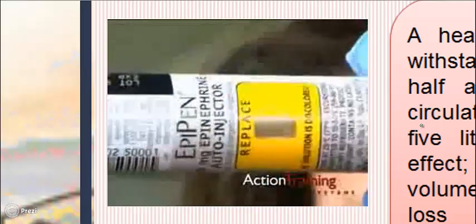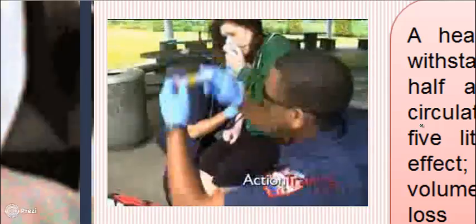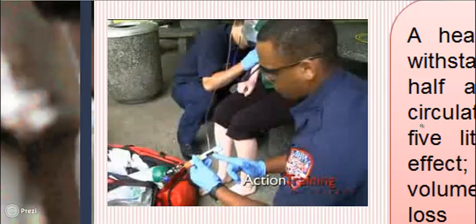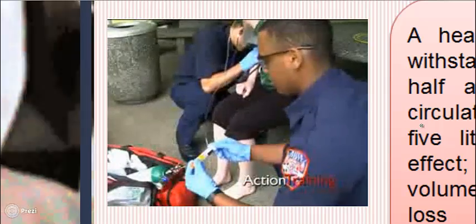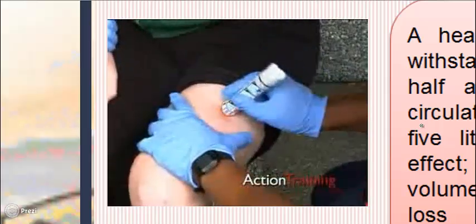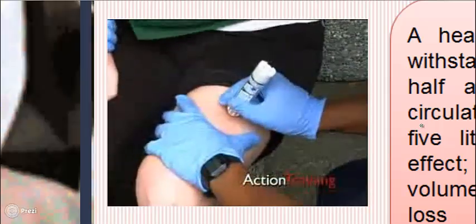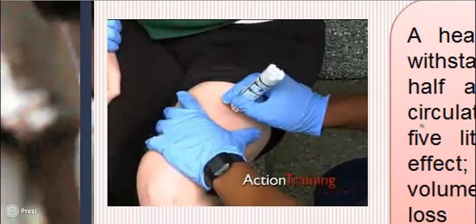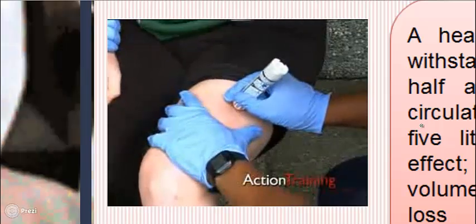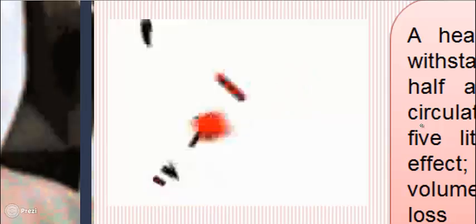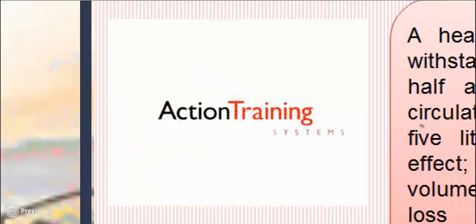Always follow your protocols regarding the use of auto-injectors. To administer an auto-injector, confirm that you have the correct drug on hand and check the expiration date. Press the end of the injector firmly against the outer aspect of the patient's upper leg at a 90-degree angle. Pressure will trigger the release of the spring-loaded needle and inject the dose.